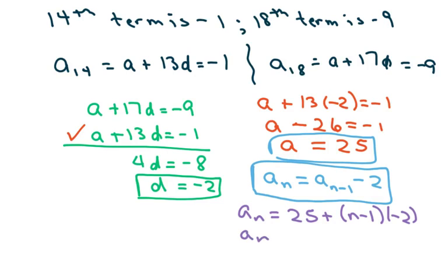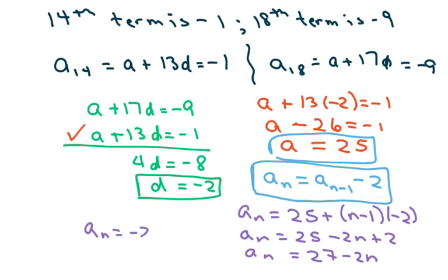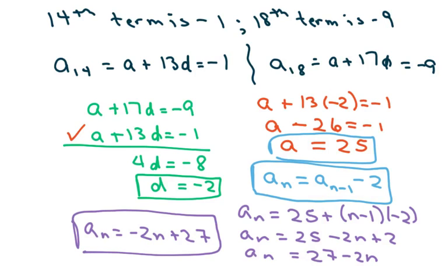Clean this up a little bit. So we get a sub n equals 27 minus 2n. Or you can write it this way. And that's your four things you had to find. Thank you. Have a nice day. Bye-bye.